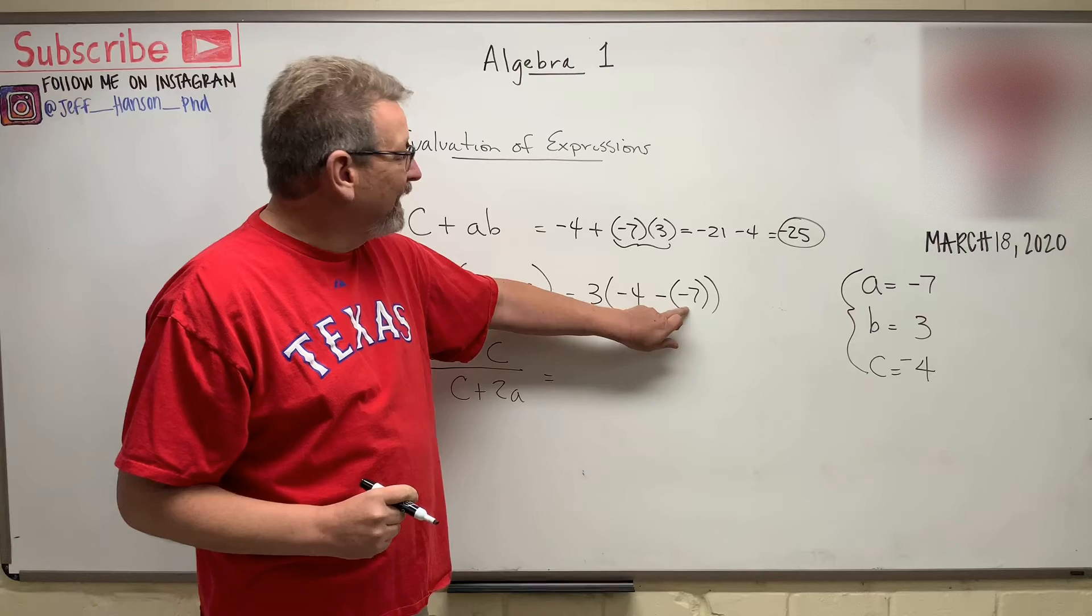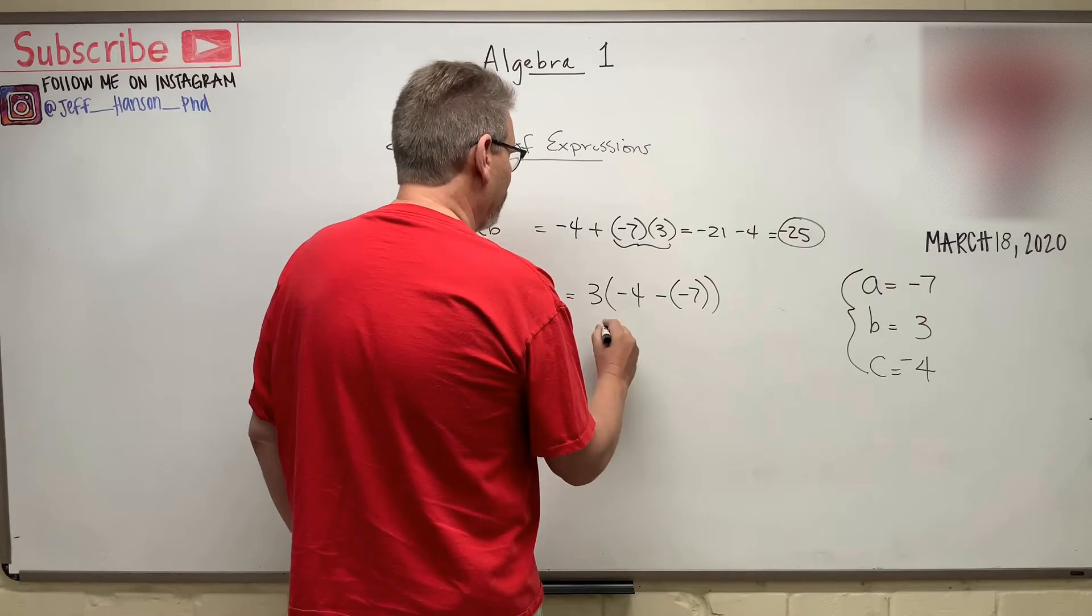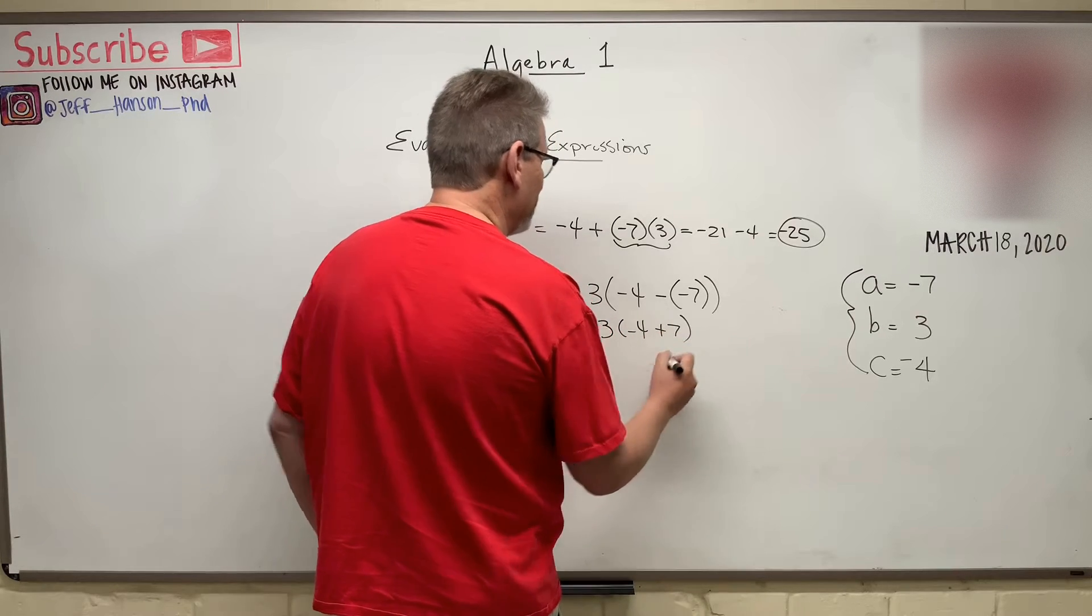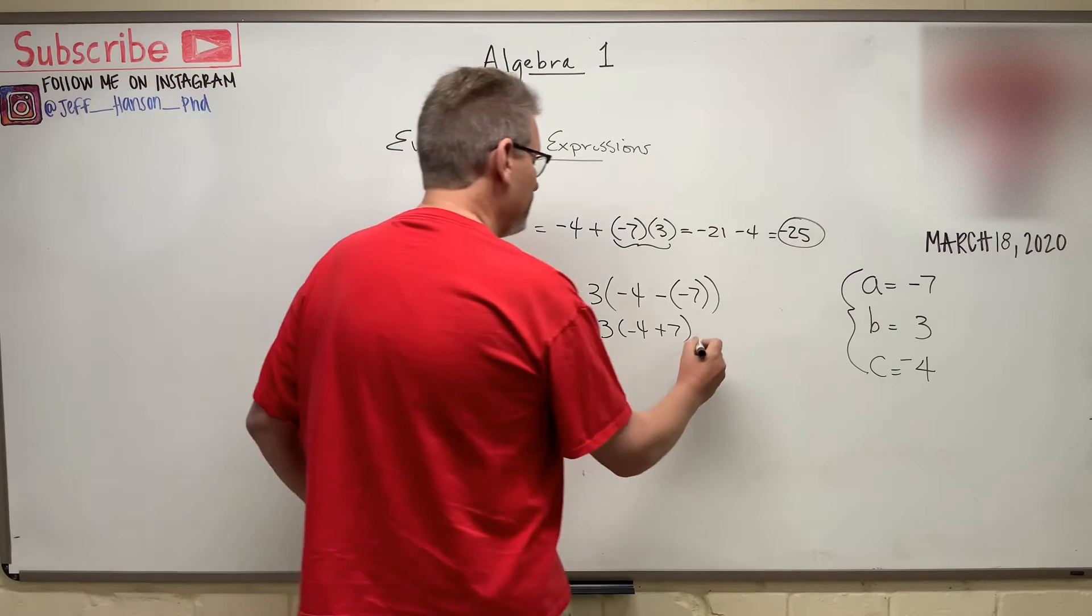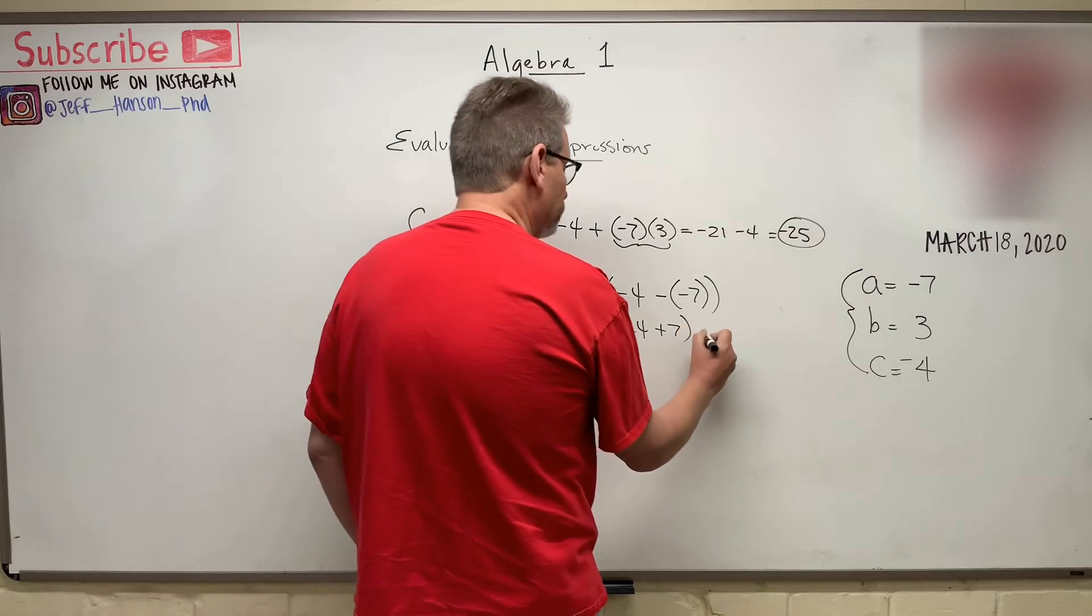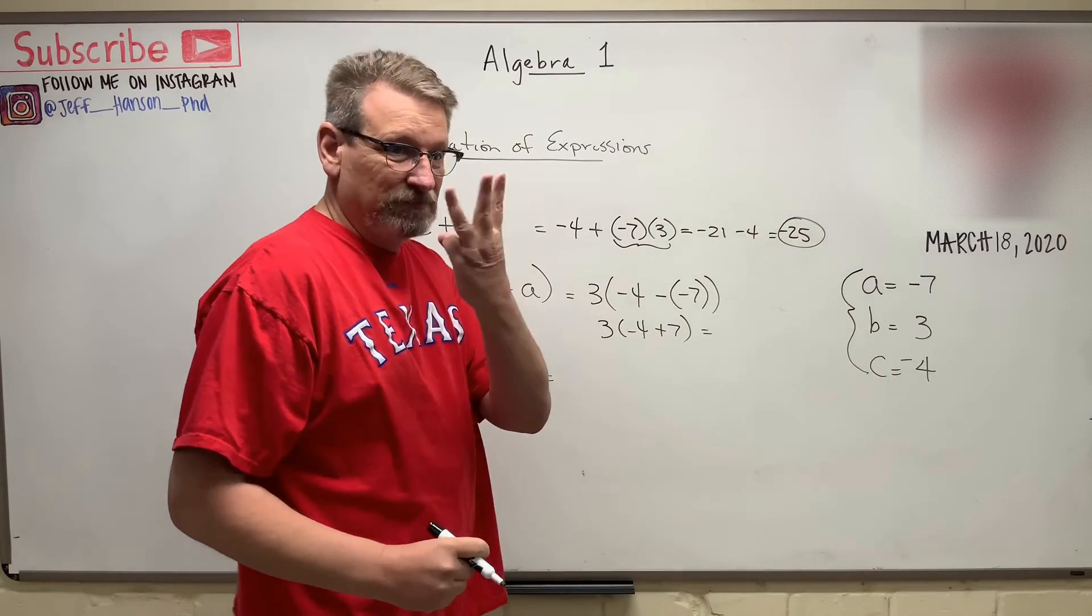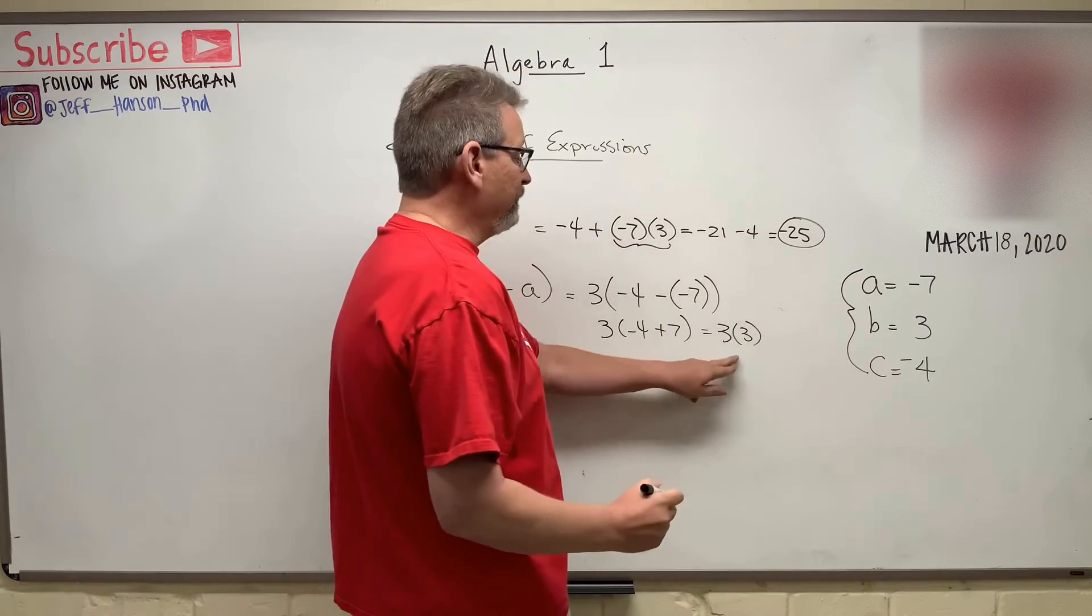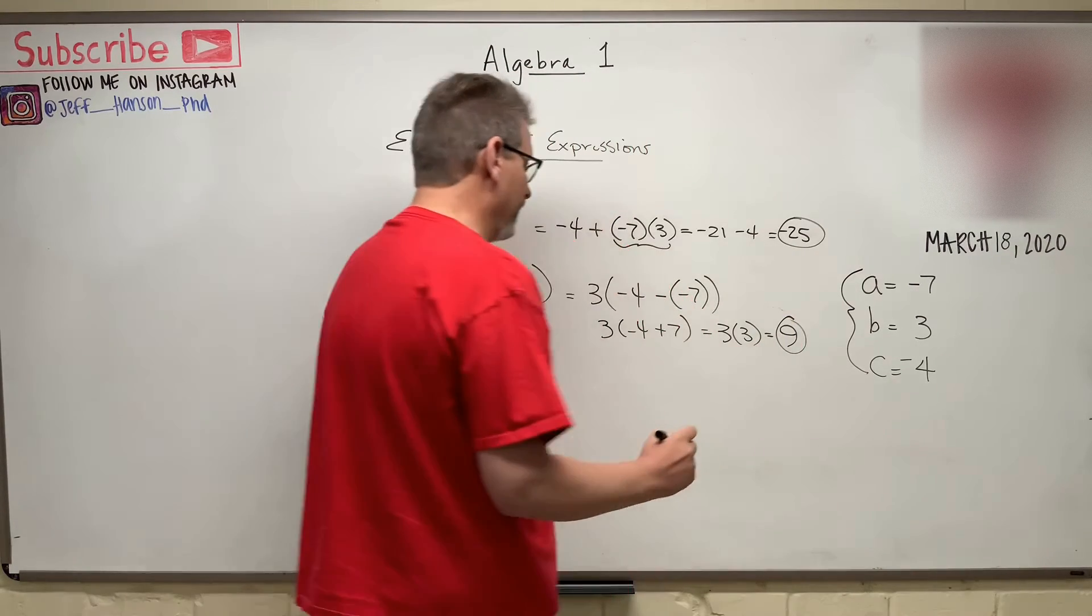Well, that turns that into a positive. So this becomes three times minus four plus seven, right? The minus and minus becomes a plus. Okay. So we'll evaluate what's inside the parentheses first. Seven minus four is three. So now I have three times three. And three times three, we all know is nine. There's that one.